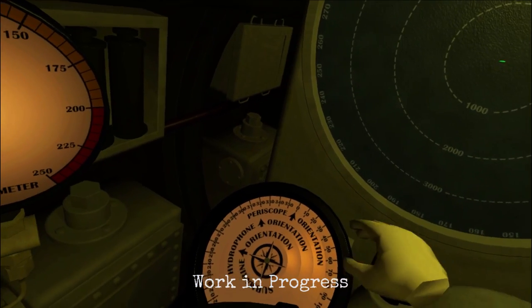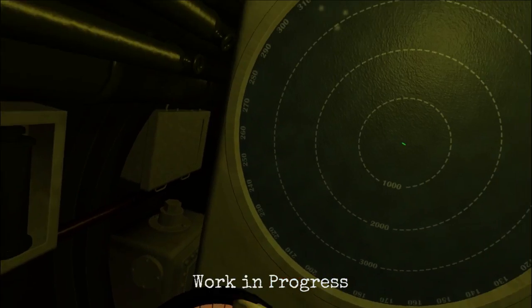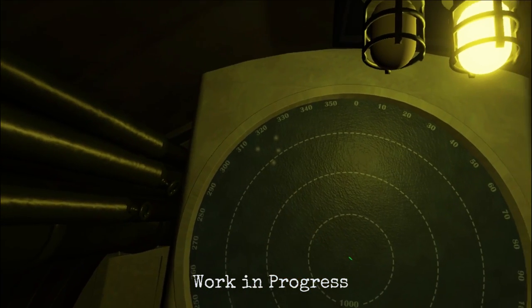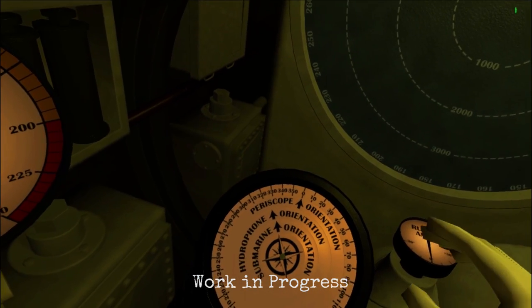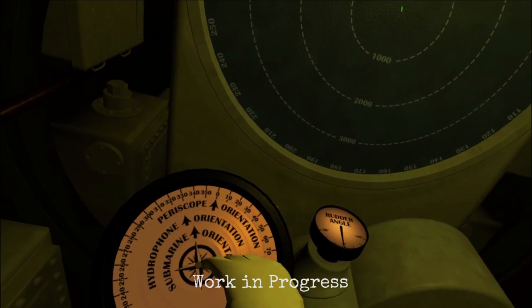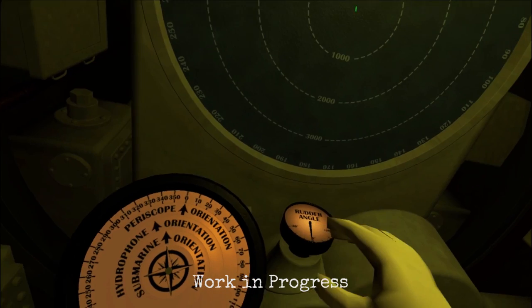The compass now shows the sub rotating around to face that bearing. Now it looks like it's going to overshoot slightly, but the autorudder will do all corrections for us with fine adjustments to the rudder.